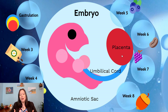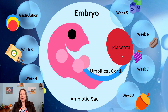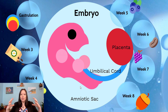The placenta also plays a very important role in filtering out potentially dangerous chemicals. Because of that, we can find traces of arsenic, mercury, or lead in the placenta in very small amounts. The placenta cannot filter out everything, but just like our kidneys or our livers, it is a filter.